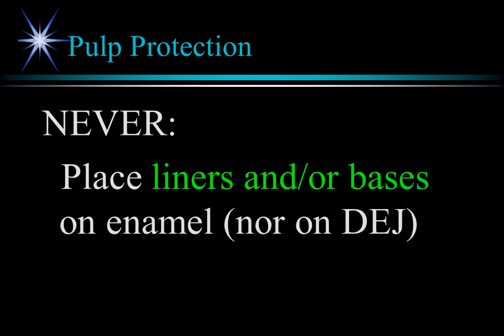Never place liners or bases on the DEJ or enamel. Keep the liner/base off the DEJ to ensure the material is not on enamel. It is not needed on enamel, and if the liner or base material is at the margin, you have a much weaker and potentially soluble material at the cavo-surface margin — which is exposed to the wet oral environment, thermal changes, bacteria, and micro-leakage. However, some glass ionomers used as restorative materials can be placed to restore a preparation or as a first increment at a cavo-surface margin, often in what is called the sandwich technique.